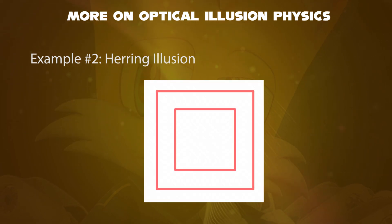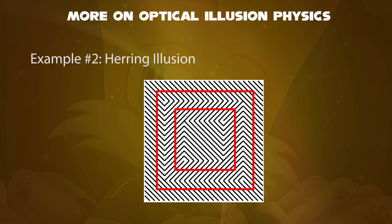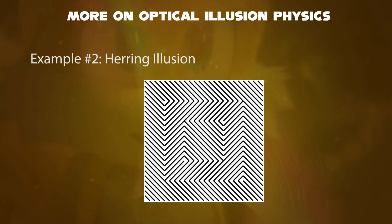Consider two squares are placed in the white background, that appear to be straight first. When we show some patterns of a diagonal line, the squares will tend to bend itself, due to the illusion effect.